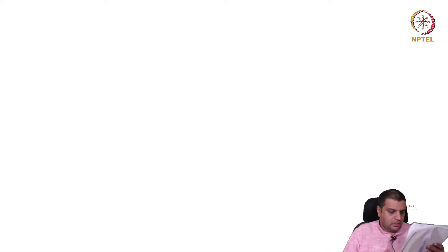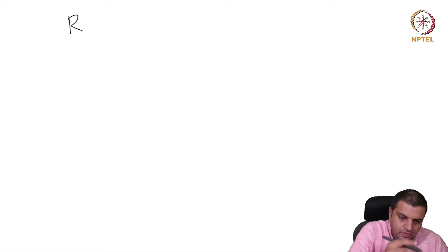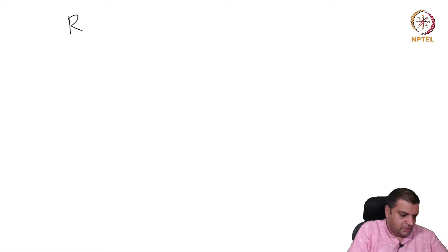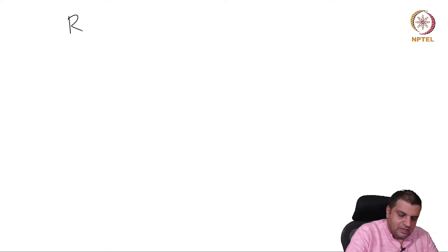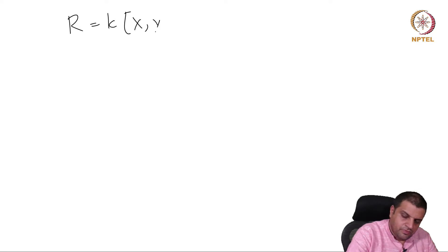Let us do a quick example to use this idea, and we will come back to this example when computing what are called syzygies. R is a polynomial ring in 3 variables, and we are considering graded lex.